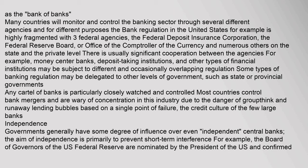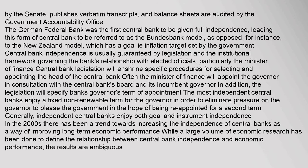Governments generally have some degree of influence over even independent central banks; the aim of independence is primarily to prevent short-term interference. For example, the Board of Governors of the US Federal Reserve are nominated by the President and confirmed by the Senate, and balance sheets are audited by the Government Accountability Office. The German Federal Bank was the first central bank to be given full independence, leading this form to be referred to as the Bundesbank model. Central bank independence is usually guaranteed by legislation and the institutional framework governing the bank's relationship with elected officials, particularly the Minister of Finance. Central bank legislation will enshrine specific procedures for selecting and appointing the head of the central bank.